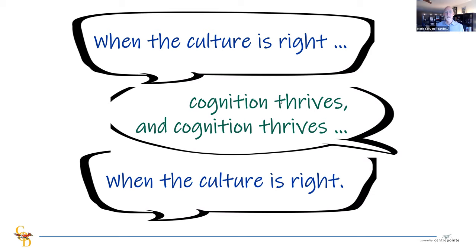Let's talk about what it means for culture to be right — not right versus wrong, but right in this context meaning useful. When the culture is useful for high levels of brain functioning, then cognition thrives. If cognition is thriving, that means the culture we laid down in the Petri dish of our learning environment is right — it is most useful. One word we use to describe culture in that way is optimal.